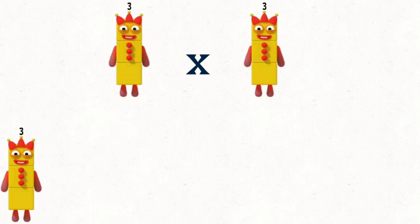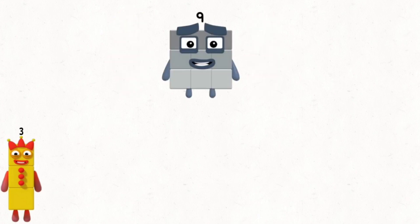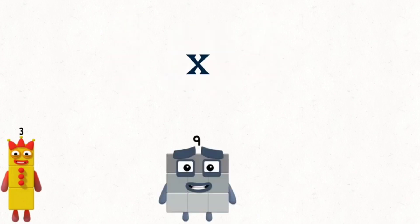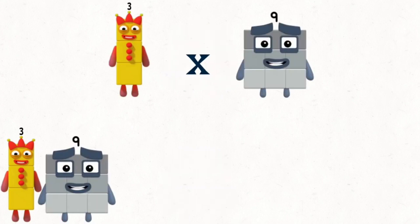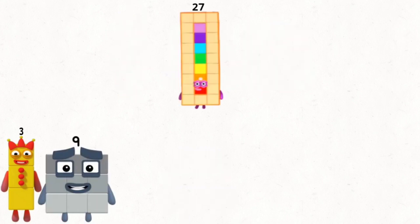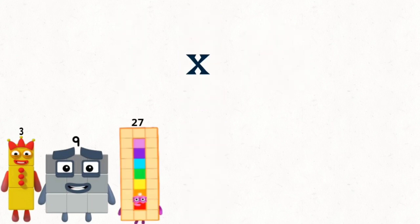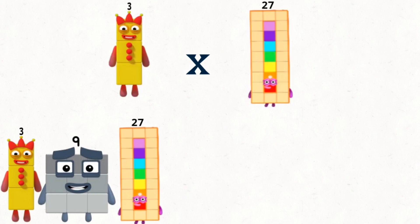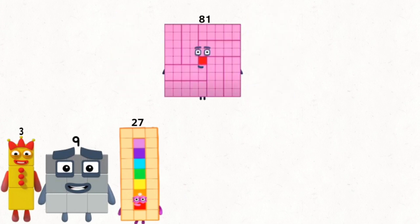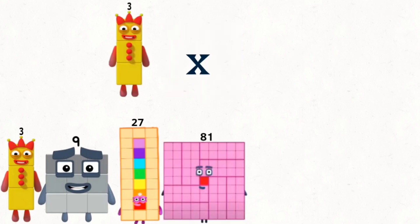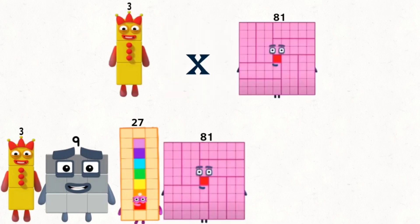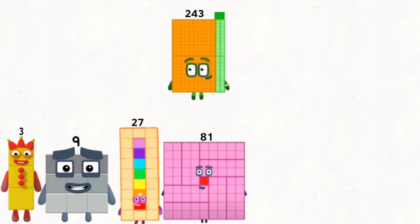3 times 3 equals 9. 3 times 9 equals 27. 3 times 27 equals 81. 3 times 81 equals 243.